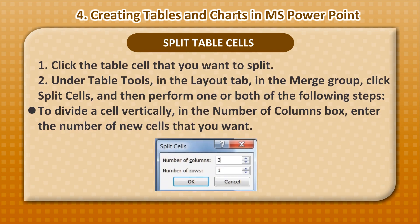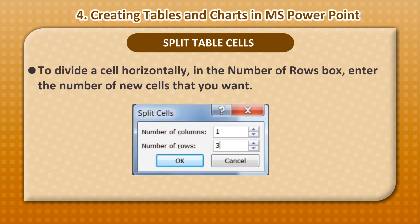Split Table Cells: 1. Click the table cell that you want to split. 2. Under Table Tools, in the Layout tab, in the Merge group, click Split Cells. Then perform one or both of the following steps: to divide a cell vertically, in the Number of Columns box, enter the number of new cells that you want. To divide a cell horizontally, in the Number of Rows box, enter the number of new cells that you want.